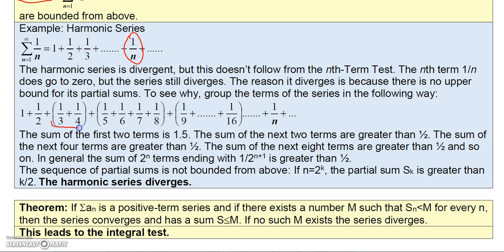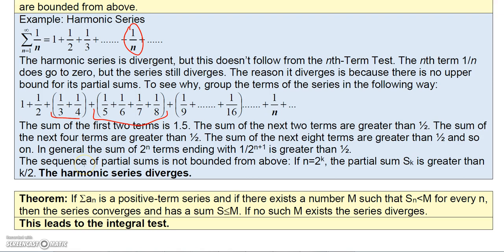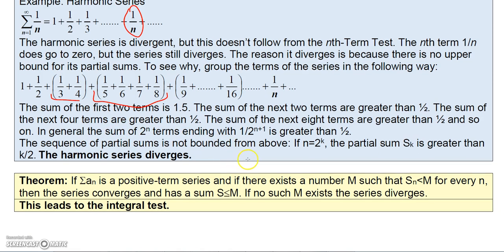The reason the harmonic series diverges is that there is no upper bound for the partial sums. If you group the terms, the sum of the first two terms is one and a half, the sum of the next two terms is greater than a half, the sum of the next four terms is greater than a half, and the sum of the next eight terms is greater than a half, and so on. In general, the sum of the 2^n terms ending with 1/2^(n+1) is greater than a half, so the partial sums are not bounded from above. If n equals 2^k, then s_k is greater than k/2, and therefore the harmonic series diverges.